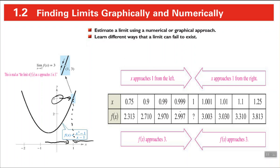You can also see it numerically here. If we're looking numerically from the right and from the left of this particular function, x to the third minus one over x minus one, and we're taking these x values and substituting into this function, then we see that the values get closer and closer to three from the right and from the left. However, if we put one in there, that would be undefined because one minus one is zero in our denominator. So we're not trying to find the actual value of one — we just want to know what the function is approaching as x is approaching one.